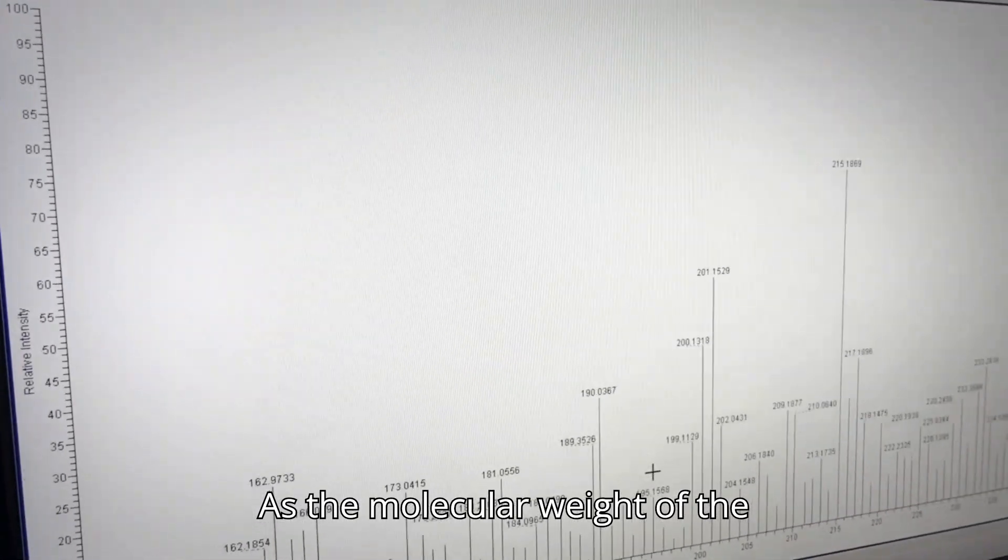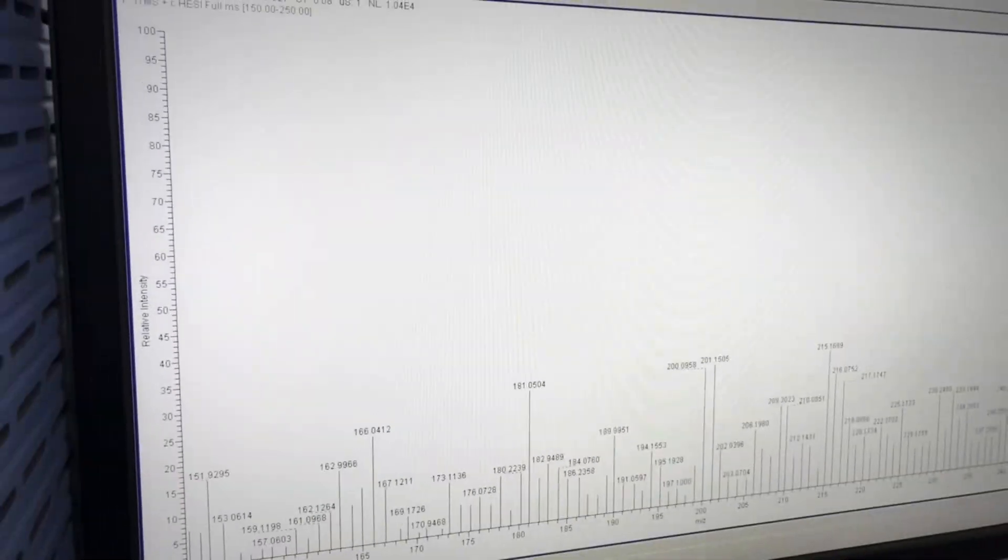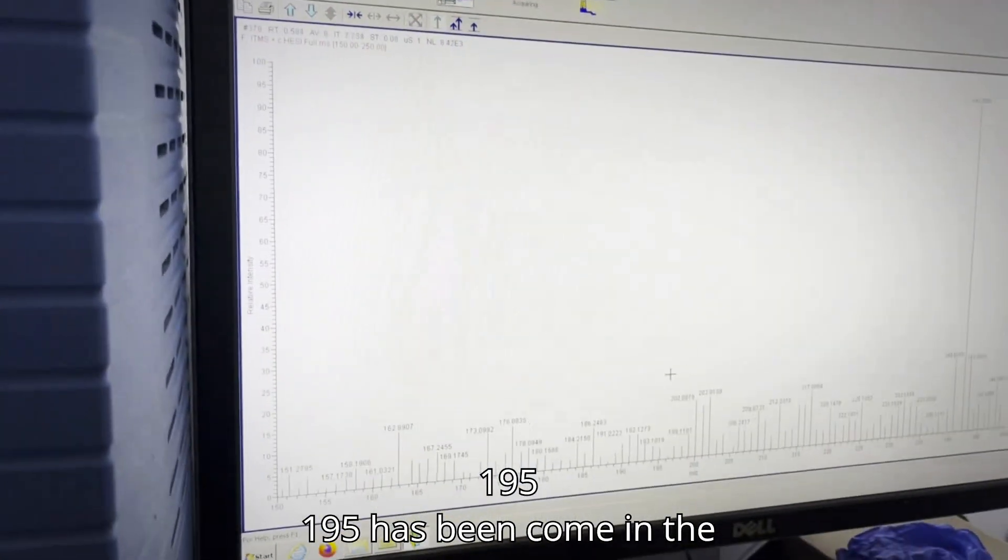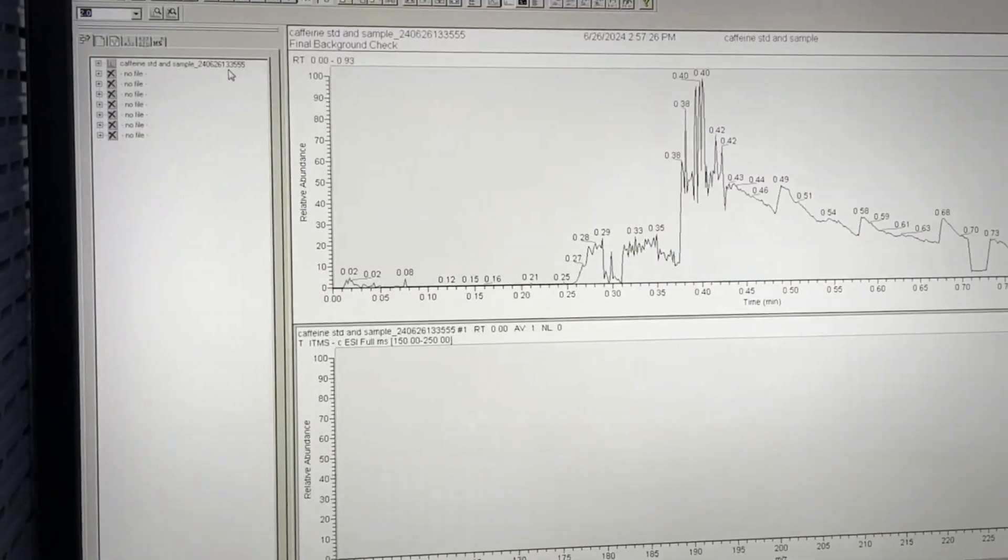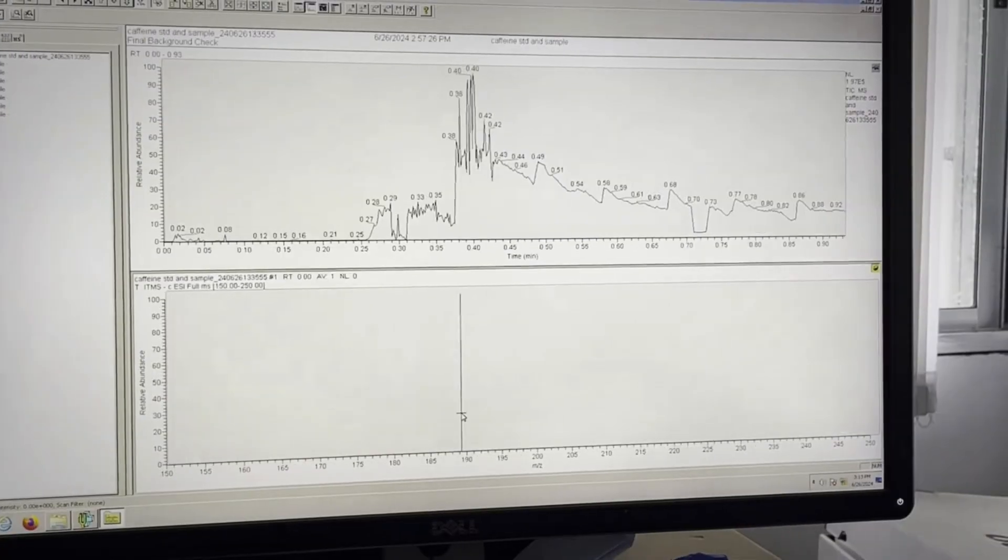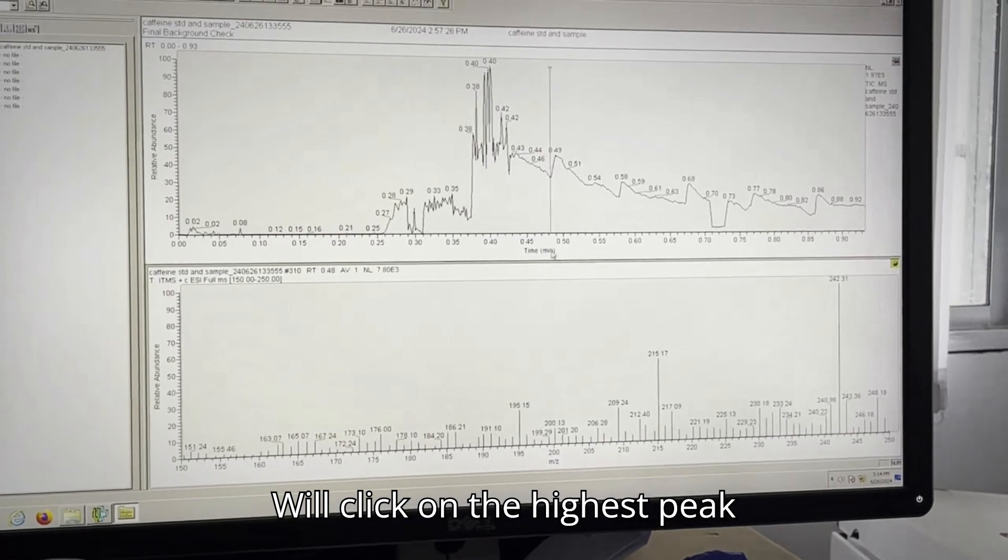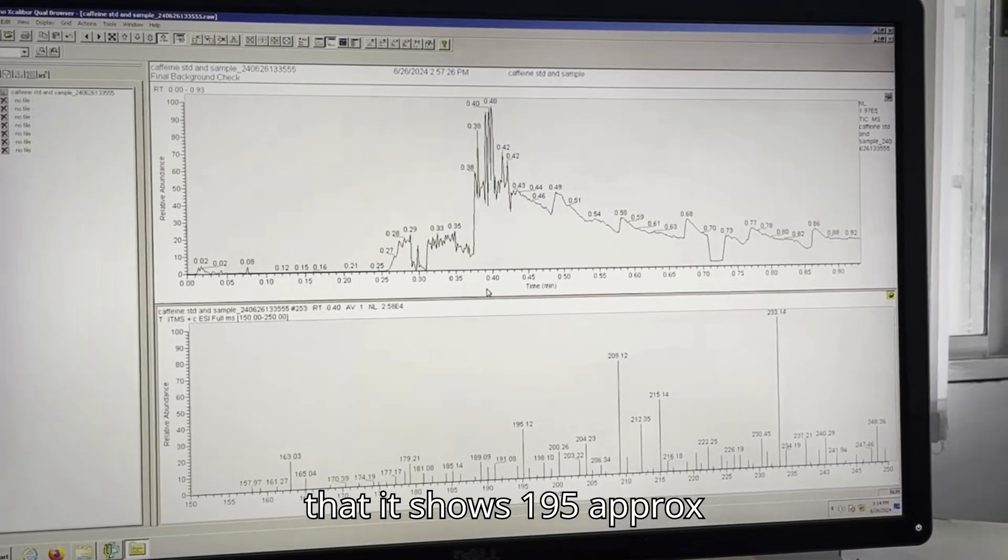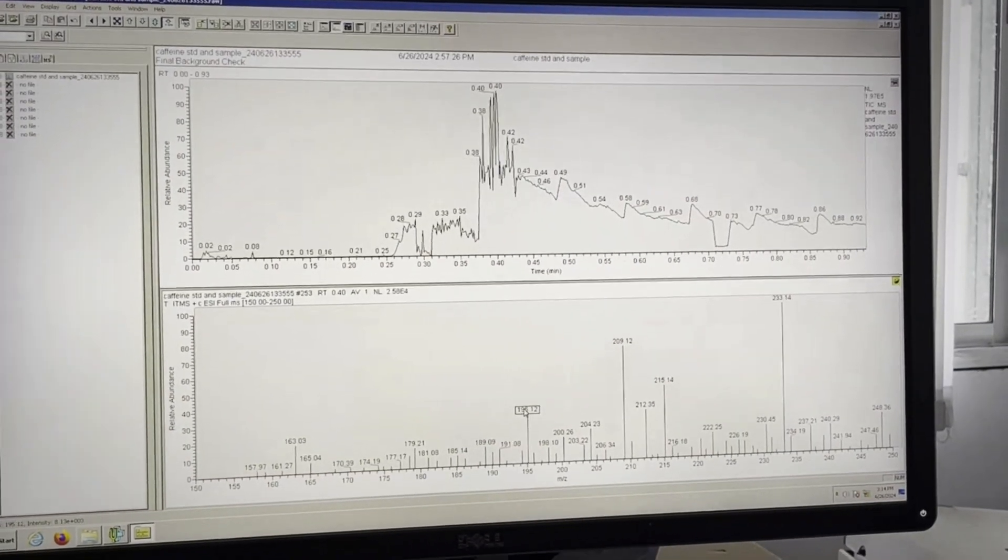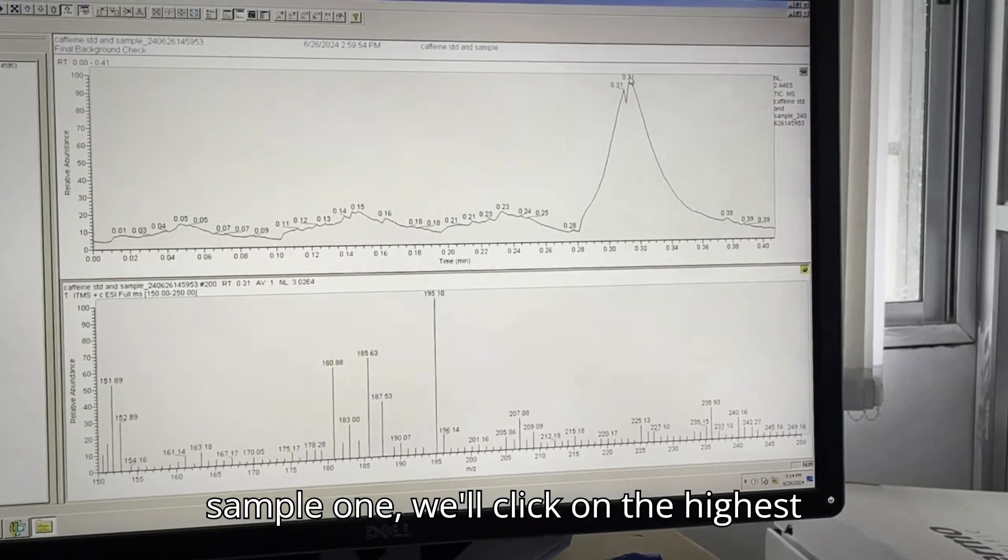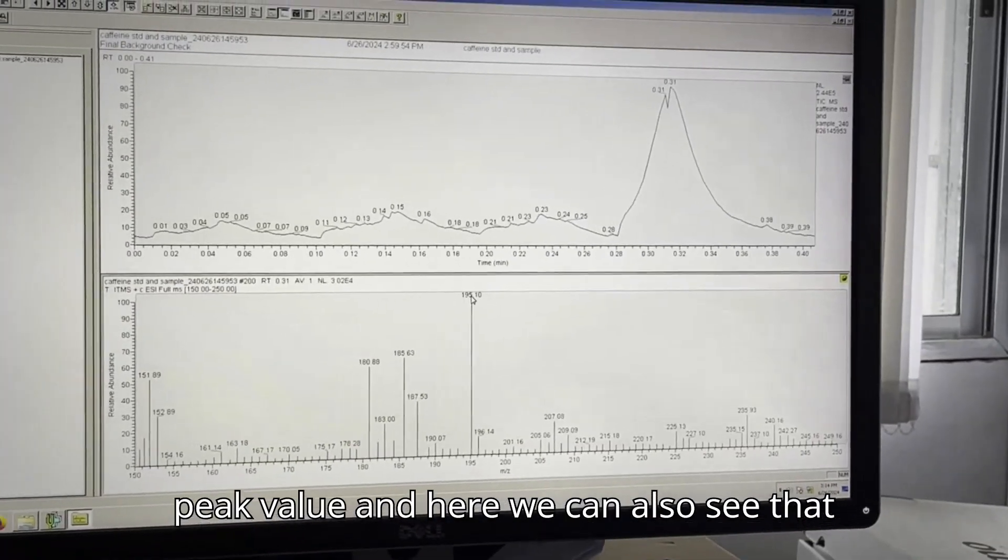As the molecular weight of the caffeine is 194, here we can see the peak, one approximately 195 has been come in the positive way. After that, we will analyze the standard peak. We will click on the highest peak value. And we can see in the computer screen that it shows 195, approximately 195 over there. Here we will visualize for the sample one. We will click on the highest peak value. And here we can also see that the value.